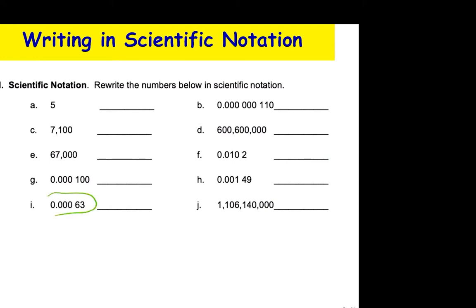Whether the number is small or large, you're going to write it in the power of 10. Whenever a number is less than one, you're going to have an exponent of 10 to the minus some value, because you're going to be moving the decimal point from left to right, giving a more negative value. When a number is bigger than one, it's going to have a positive exponent.